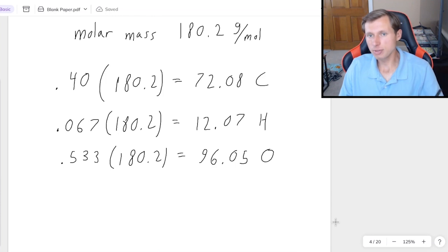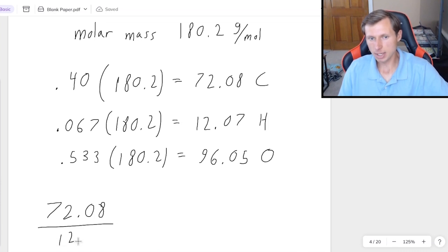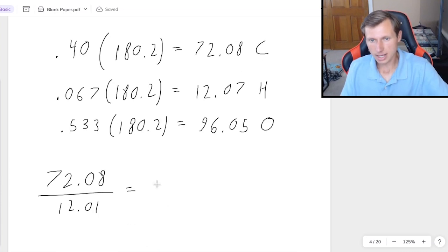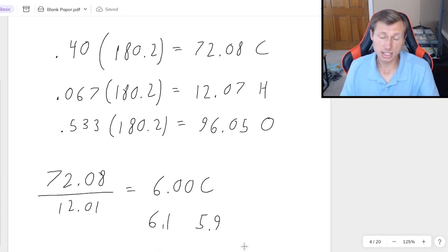And now for each of these, I just have to divide by their individual molar masses or atomic weights. So for carbon, that's divided by 12.01. So if I divide that, I'll get 6.00 for carbon. If it's not exact, by the way, sometimes you get like 6.1 or 5.9. You can round that to 6 because it needs to be an integer or whole number value.